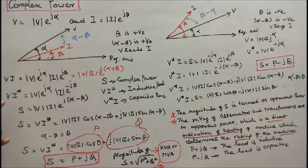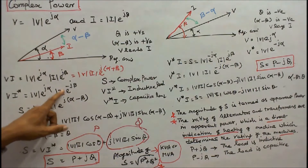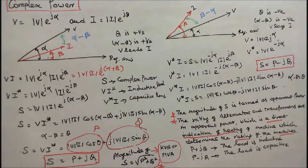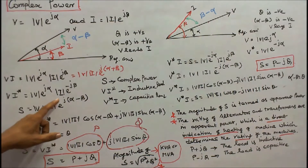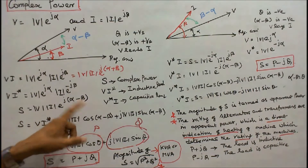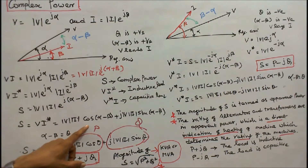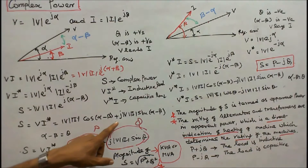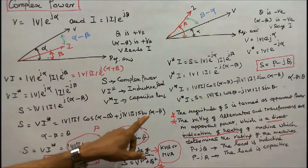We can write S equal to V times I conjugate. V equals modulus of V times e to the power j-alpha. I conjugate equals modulus of I times e to the power minus j-beta. Therefore, S equals modulus of V times modulus of I times e to the power j(alpha minus beta). Expanding: S equals modulus of V times modulus of I times cos(alpha minus beta) plus j times modulus of V times modulus of I times sin(alpha minus beta).